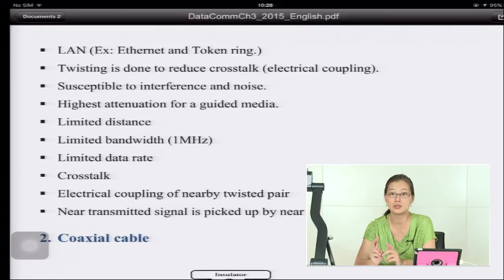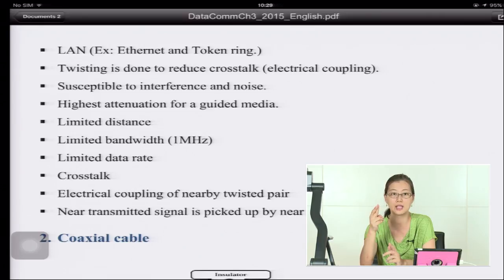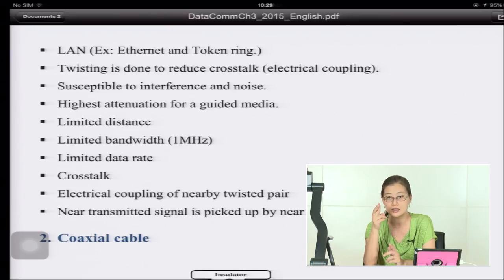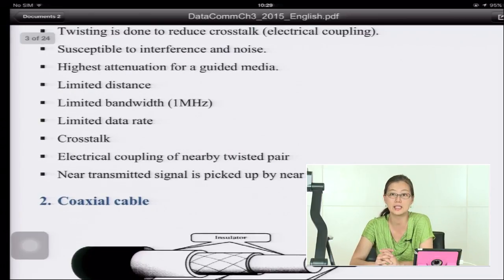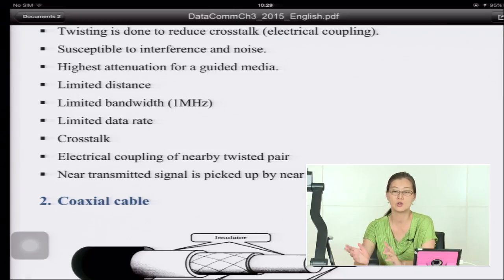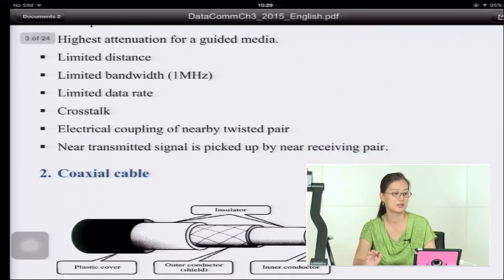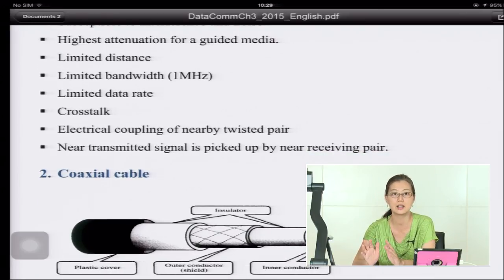The two wires are twisted together to reduce crosstalk, which is a type of noise. There is electrical coupling between the two lines, and twisting them cancels this effect. Twisted pair is susceptible to interference and noise — external noise and crosstalk can enter the copper wire and increase the noise level.